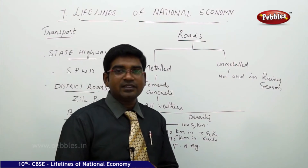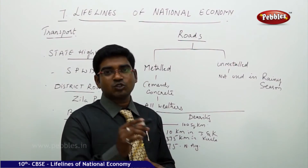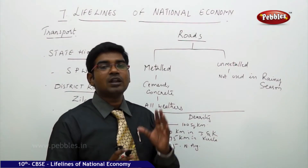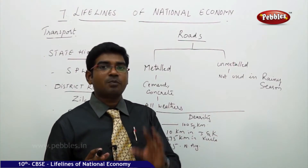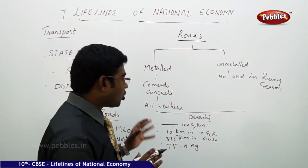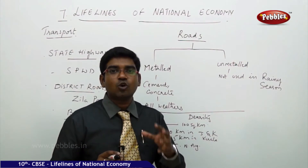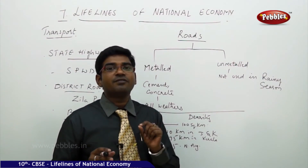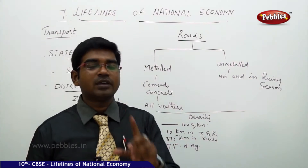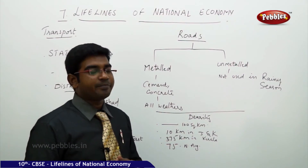Moving on to understanding density — density is generally calculated as the number of people living per one square kilometer of region, which is called the density of population. But when we talk about road density, the length of road laid for every hundred square kilometers is called the national road density.